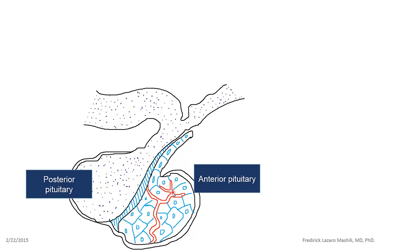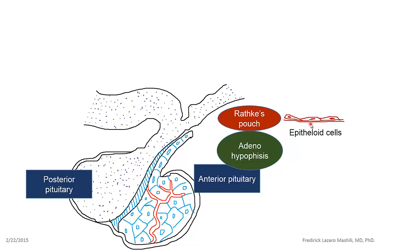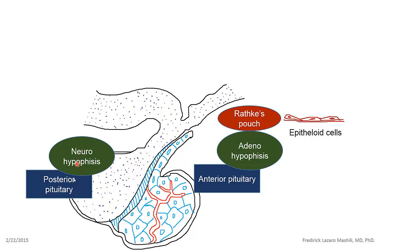The anterior pituitary is also known as the adenohypophysis, meaning that it has a lot of glandular cells, so it is secretory in nature. One important thing to understand about the adenohypophysis is that it actually originates embryologically from the Rathke's pouch. The Rathke's pouch is an invagination of epithelial cells, and because you have epithelial cells here, this is the reason why you have adeno-like cells which constitute the anterior pituitary.